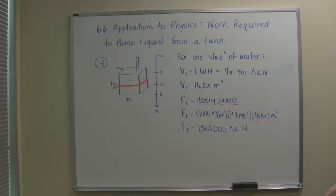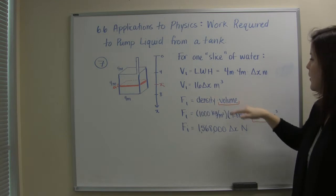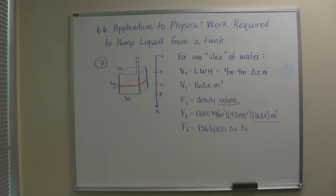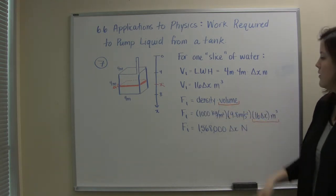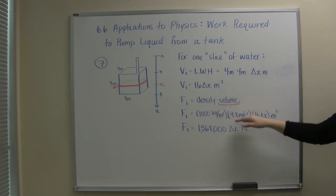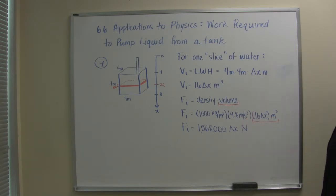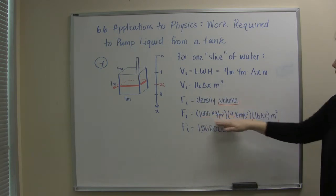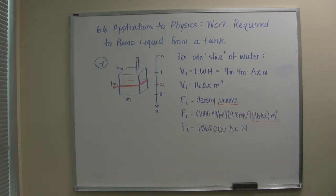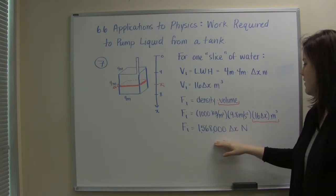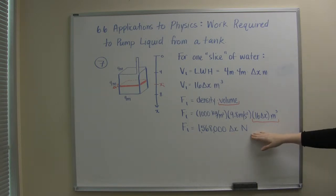Now in addition to that we need to get the force of the weight of this water. So we need to know the density and volume. The density of water is given to us. We know that the mass density is 1,000 kilograms per meters cubed times the acceleration due to gravity which is 9.8 meters per second and that will give us the density force. And then here's the volume we just computed. So if I multiply together a thousand times 9.8 times 16 delta x I get 1,568,000 delta x newtons of force.